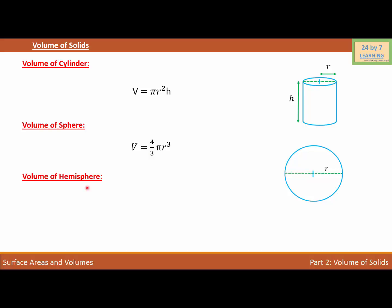A hemisphere is half of the sphere, so the volume of a hemisphere should be half of the volume of the sphere. Therefore, the volume of a hemisphere is given as V = (2/3)πr³.